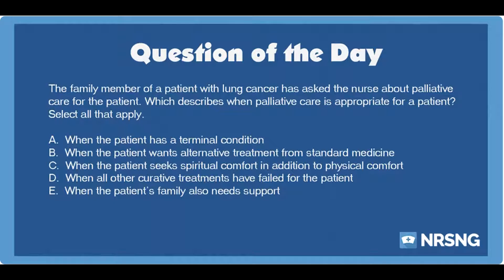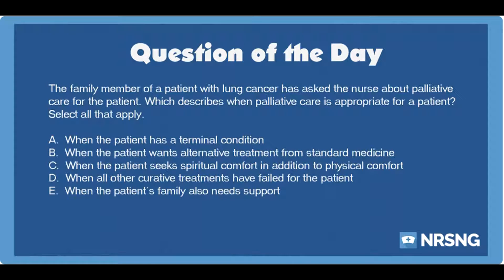Again — the family member of a patient with lung cancer has asked the nurse about palliative care for the patient, which describes when palliative care is appropriate for a patient. Select all that apply. A. When the patient has a terminal condition. B. When the patient wants alternative treatment from standard medicine. C. When the patient seeks spiritual comfort in addition to physical comfort. D. When all other curative treatments have failed for the patient. E. When the patient's family also needs support.